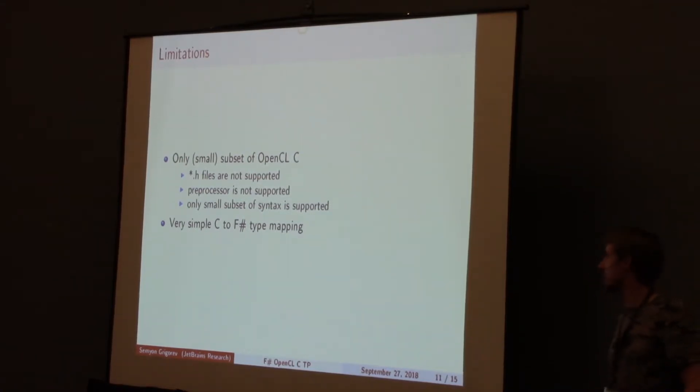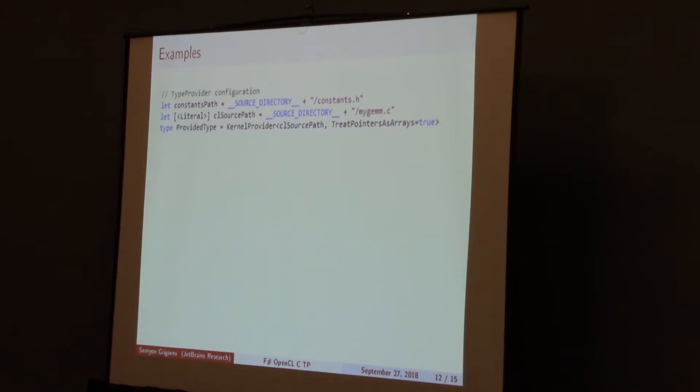Our work is in progress, and we have some limitations. Some of them are technical and may be removed by improvement. But some limitations look more principled. For example, it's not evident that we can create a full bijective map between OpenCL types and F# types. Just because type providers are very limited, so you can have some technical problems. But it works.